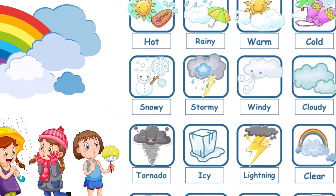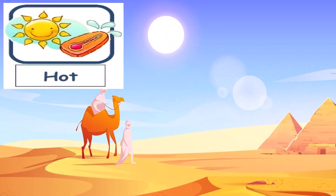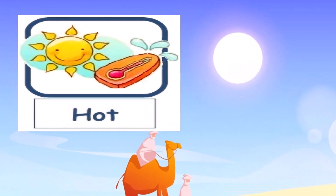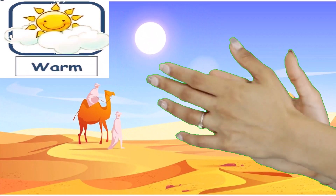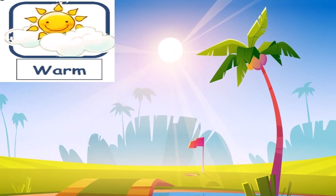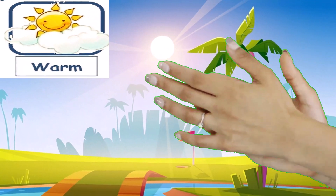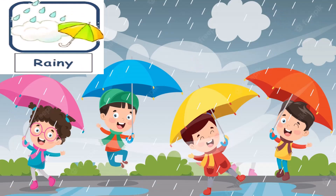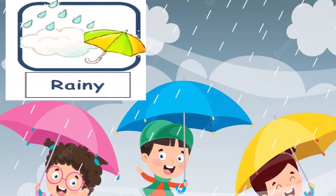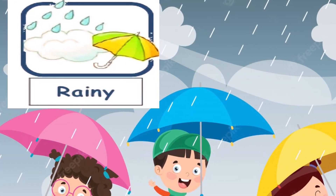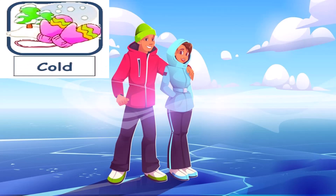Today we will learn different types of weather. It's hot — the weather is hot. It's warm, w-a-r-m, warm — the weather is warm. It's rainy, r-a-i-n-y, rainy — the weather is rainy. It's cold.